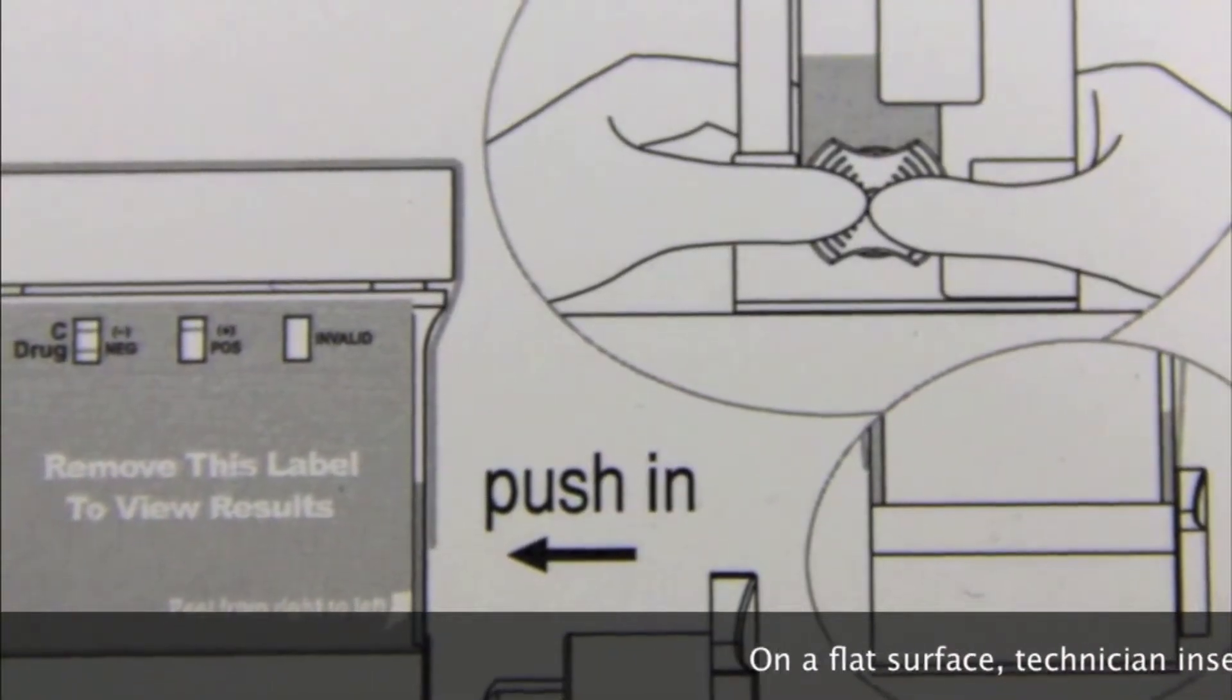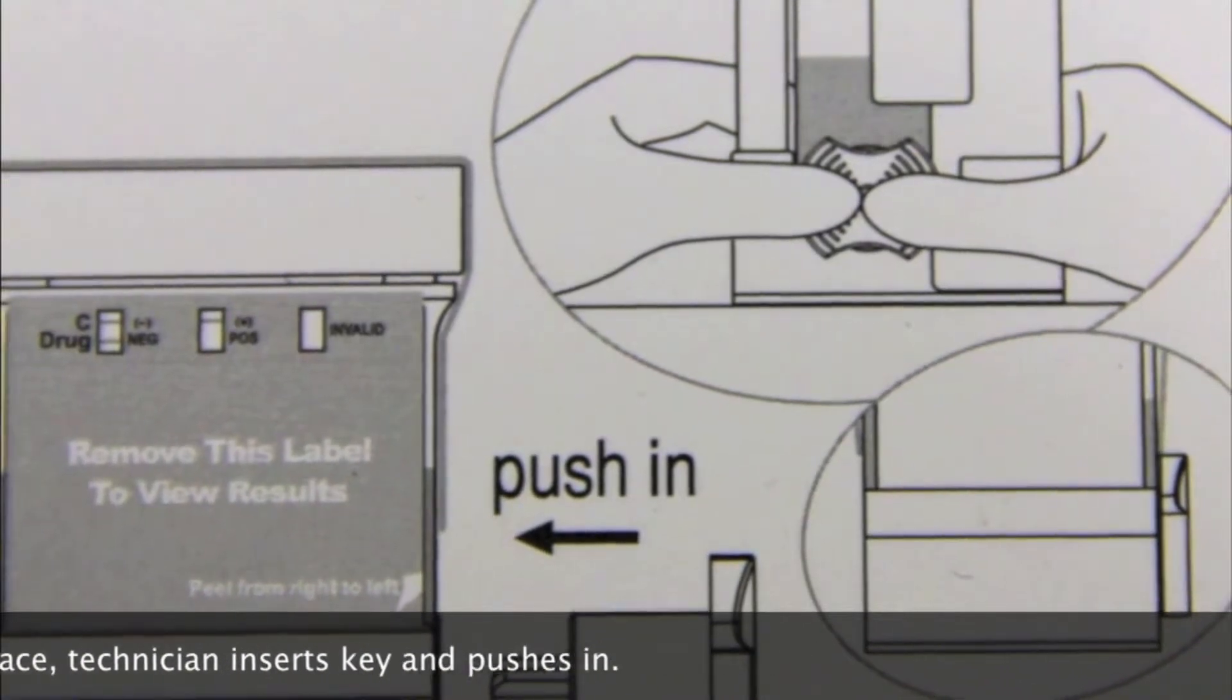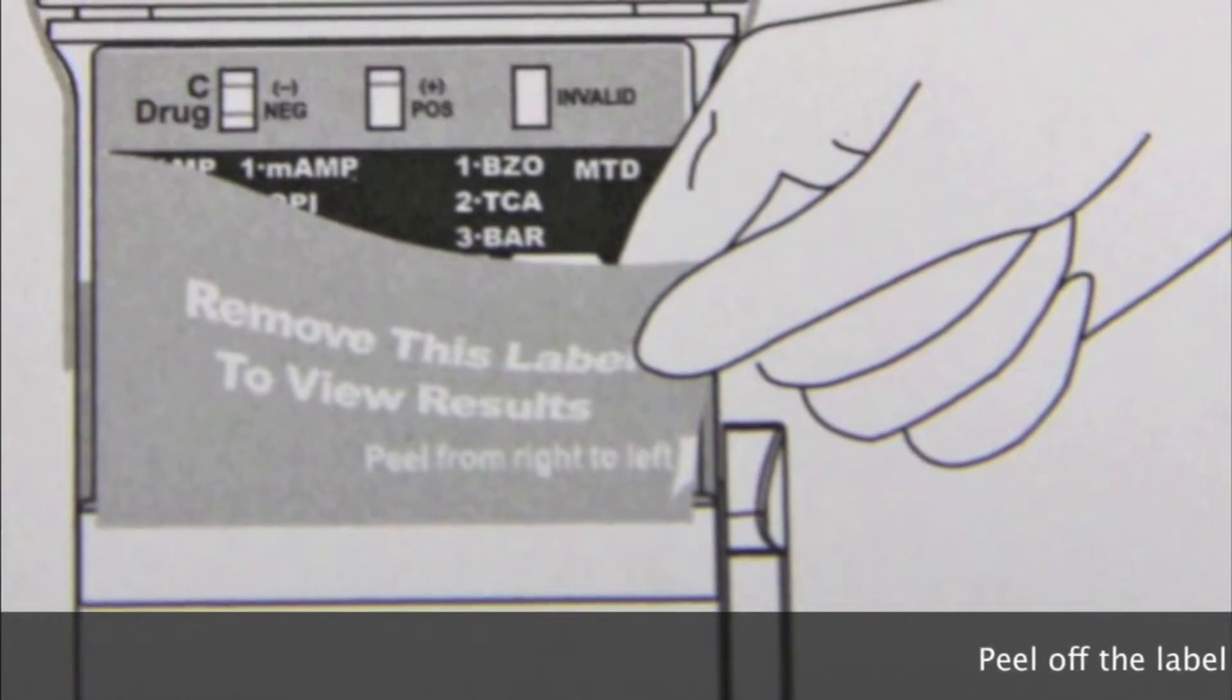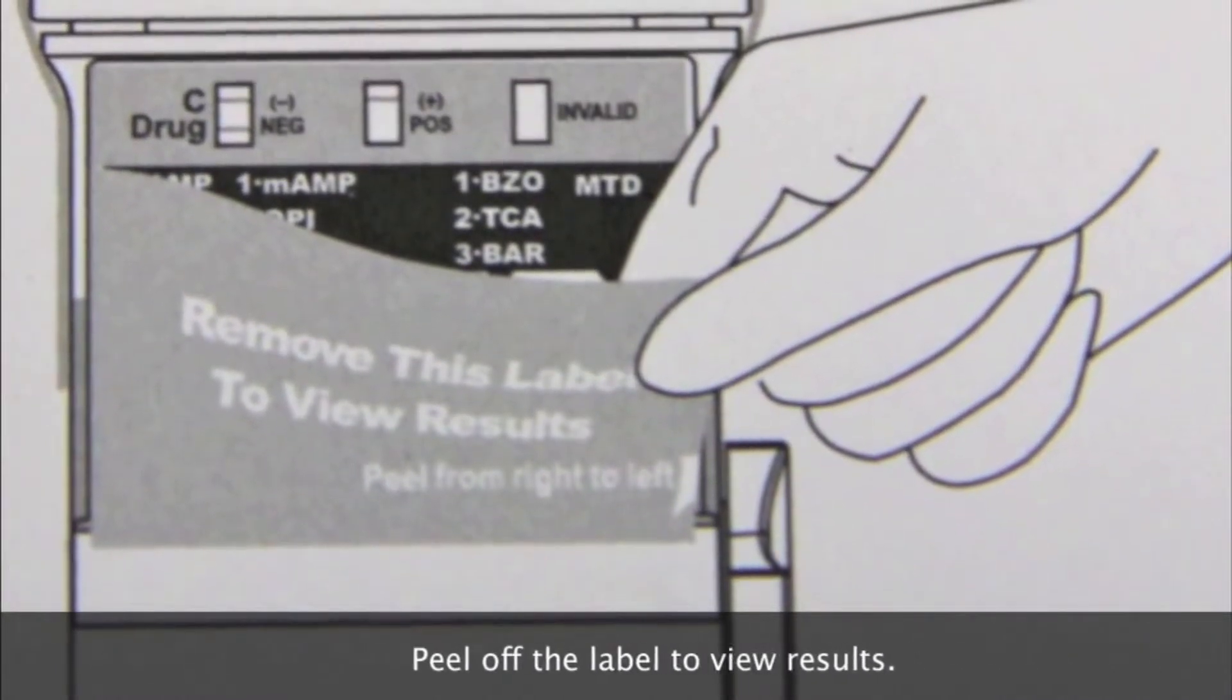On a flat, steady surface, the technician inserts the key and pushes inward. Be sure to peel off the label on the front of the test to reveal the results.